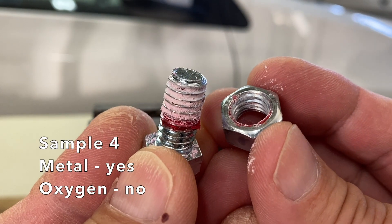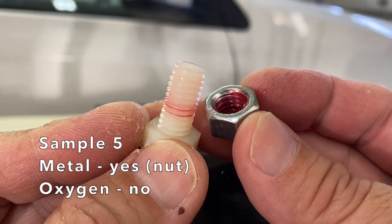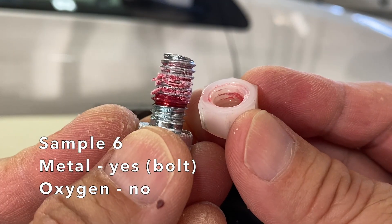Sample 4 did cure on bolt surfaces. Sample 5 cured on the metal nut. And Sample 6 cured on the metal bolt.